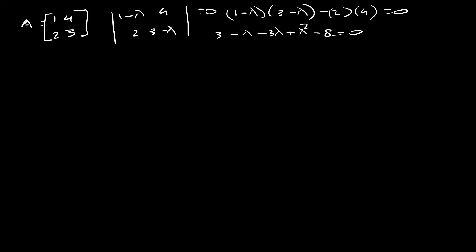Simplifying this even further, we get lambda squared, 1 minus 3 is minus 4, and 3 minus 8 is minus 5. So lambda squared minus 4 lambda minus 5 equals 0.